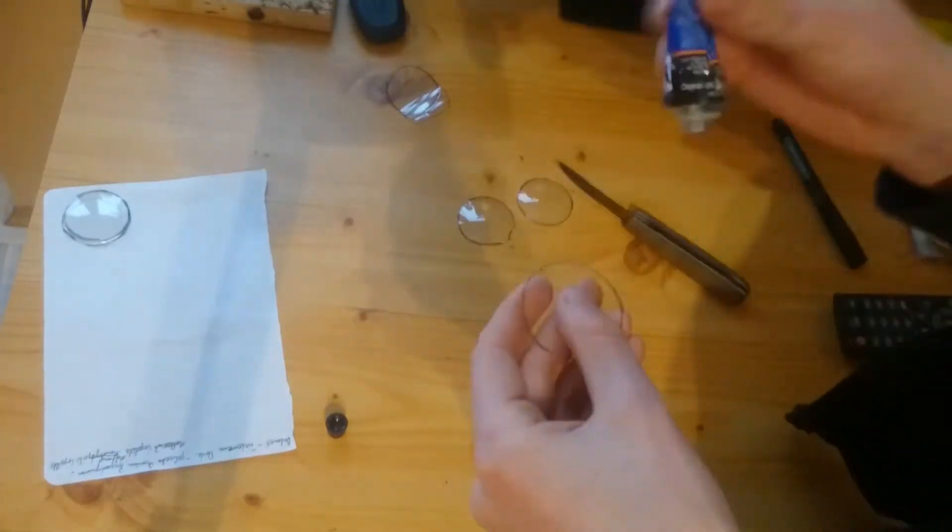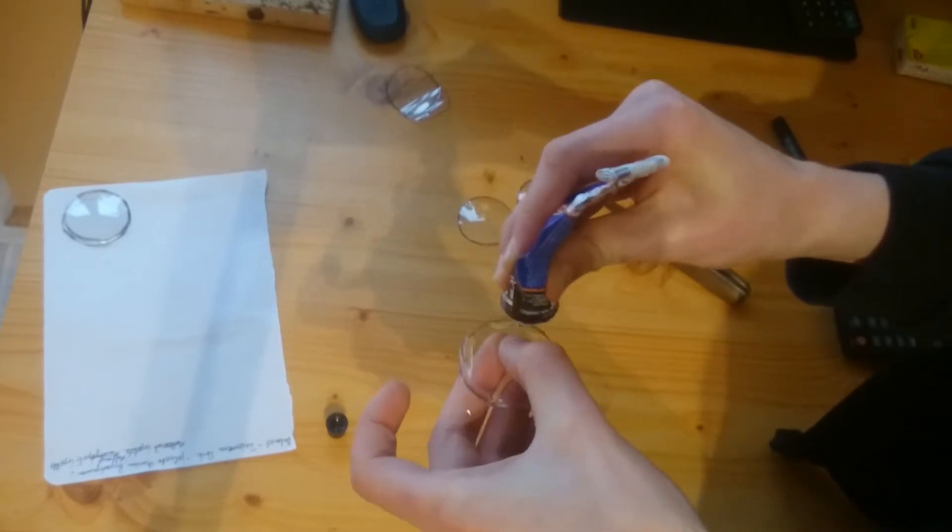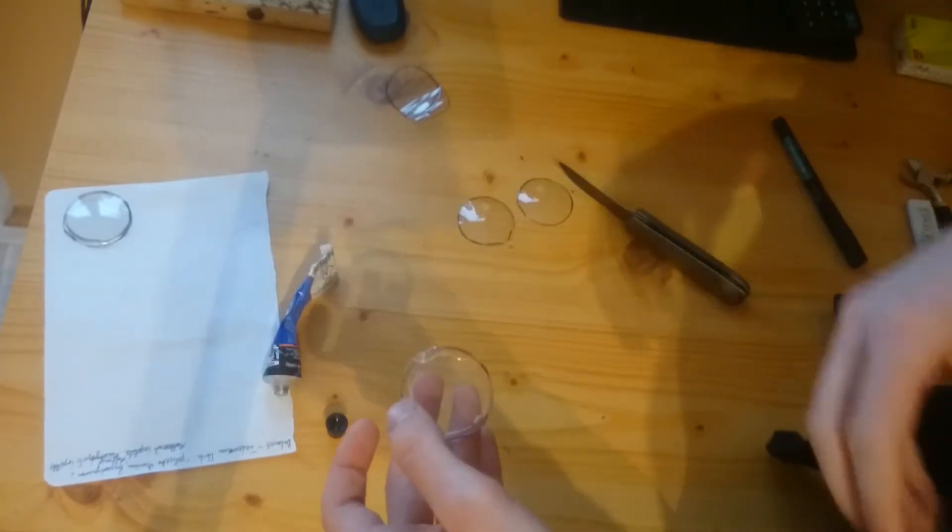And then I'm moving on to the second lens. I'm gluing the sides of the flat part and then I'm covering it with the curved part.